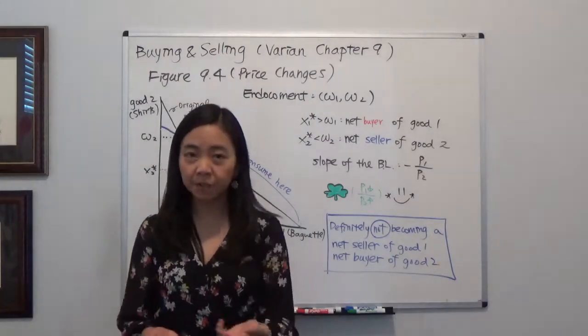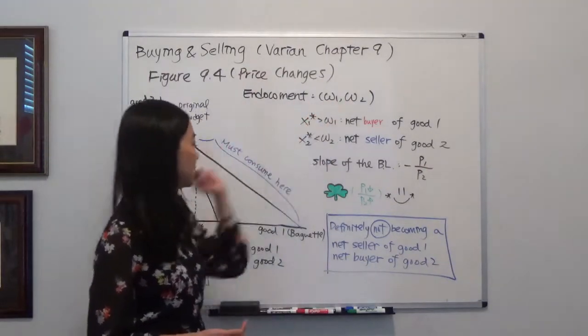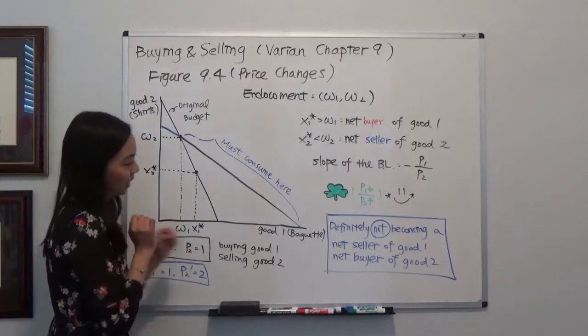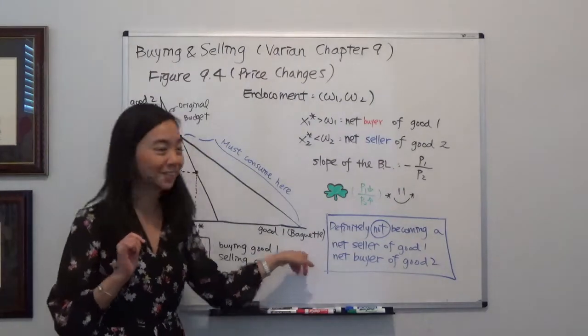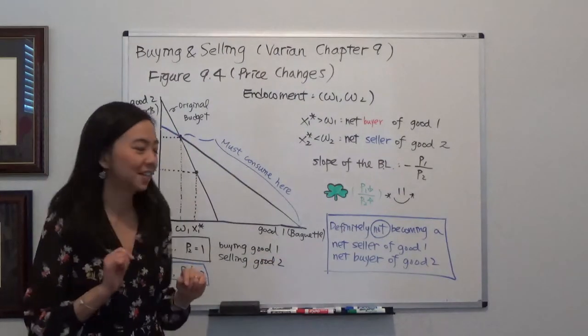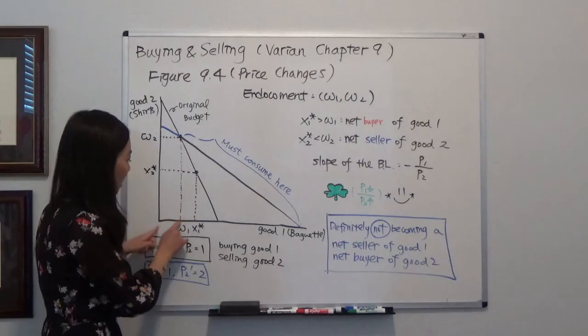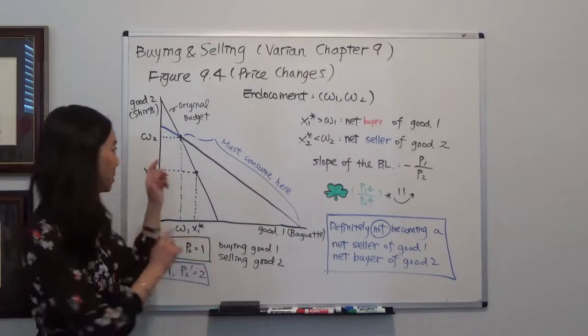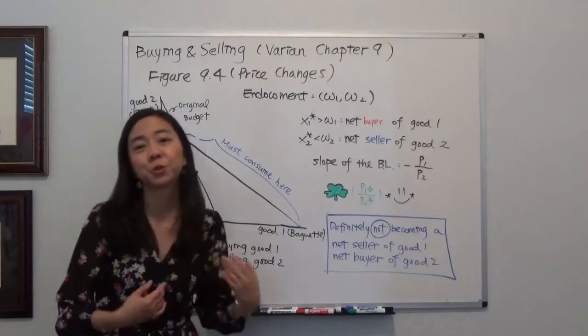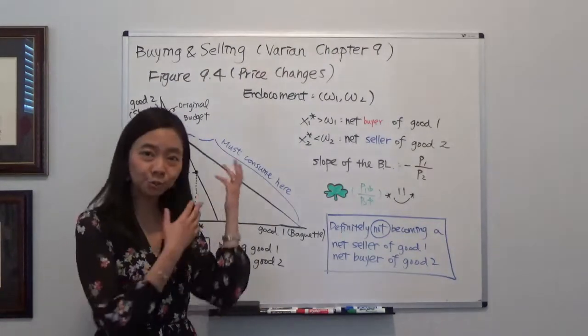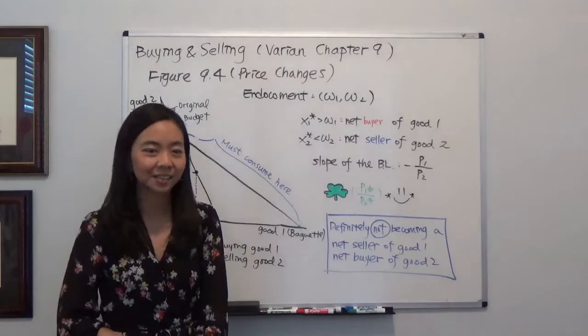Suppose we have an initial endowment, Omega 1 and Omega 2. Let's imagine that our good one is baguettes and good two will be t-shirts. Your initial endowment is such that you only have a few baguettes but you have lots of t-shirts. What you want to do is that you would like to sell your t-shirts and you're going to buy some baguettes.